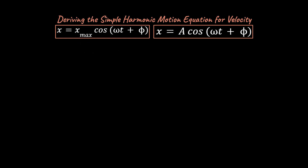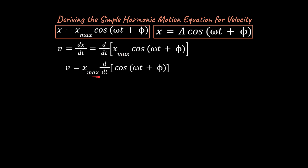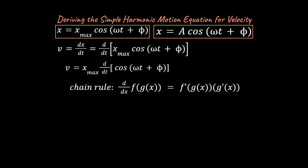So what we want to do is ask ourselves: how do we get to velocity versus time when we have a position versus time function? Well, if you've had some calculus, the solution should be pretty clear — you're going to take the derivative of the position versus time equation. x-max is a constant we can pull out of the derivative. But we need to talk about something: we have an outer function and an inner function, so what we need to do is use the chain rule. The derivative of a composite function equals the derivative of the outer function with the inner function left alone, times the derivative of the inner function.